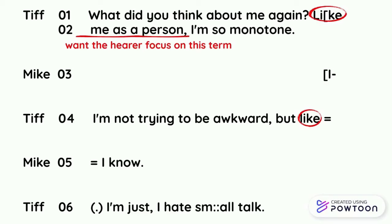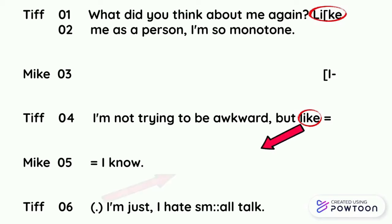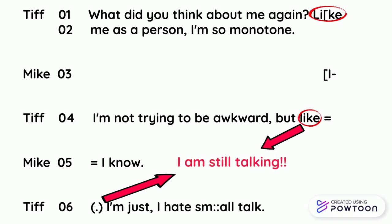The second 'like' is used for searching for the appropriate expression. As you can see from the transcription, there is a micro pause before the following sentence. Using 'like' in such a case gives the speaker time to think or refine what they are going to say. Although there is a one-second pause, 'like' tells the hearer that the speaker is looking for the right word, so the speaker can still maintain their turn-talking position.